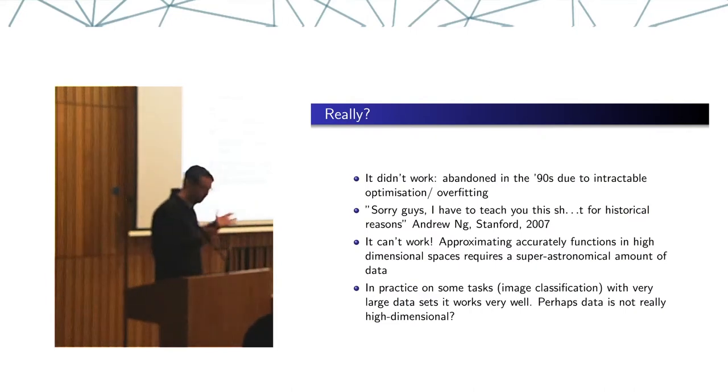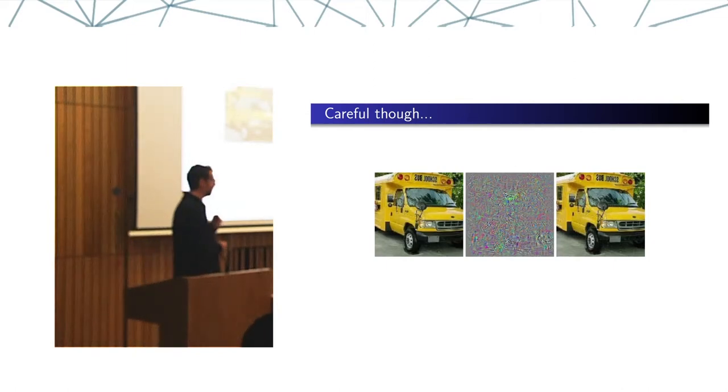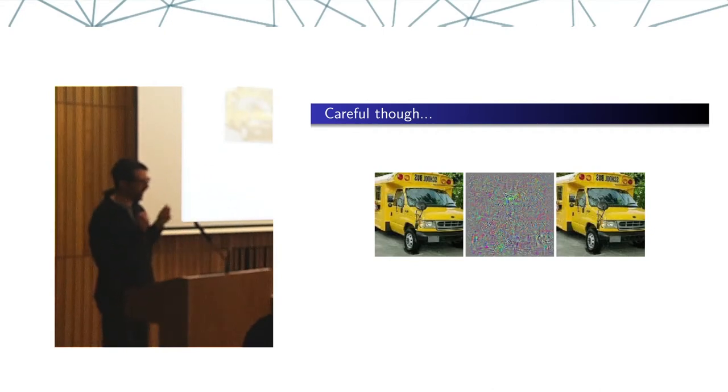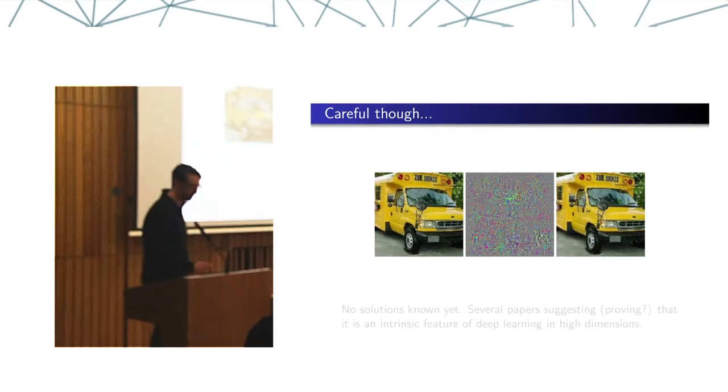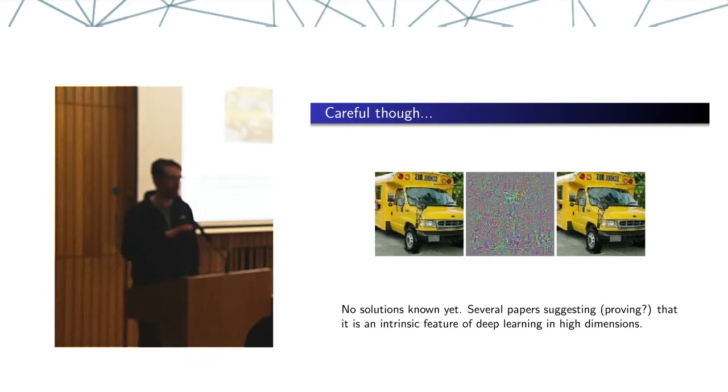Now, you might say, great, that's all we need. But, has anyone seen these pictures before? Yes, a few have, a few others haven't. So, I guess this is a bus, a school bus in the US. And this image is classified with high confidence as a bus by a state-of-the-art neural network. This image is classified high confidence by a state-of-the-art neural network as an ostrich. Why is that? Well, that would take a long time perhaps to explain, but when you're playing in very high dimensional spaces, funny things may happen. So, you may change a little bit and things change dramatically. That's an open problem. No one knows how to solve it. There are several papers that suggest, but stop short of proof, that this is actually an intrinsic feature of deep learning in high dimension. So, we are always going to be vulnerable in high dimension to what they call adversarial attacks.